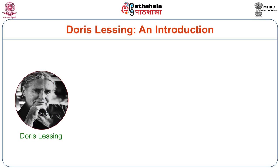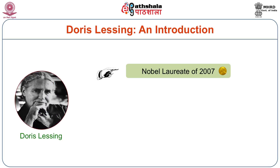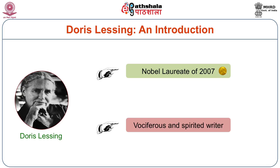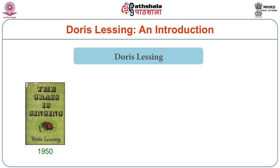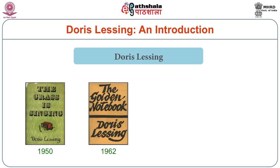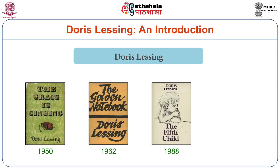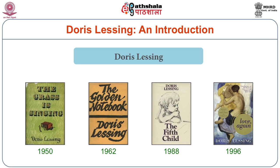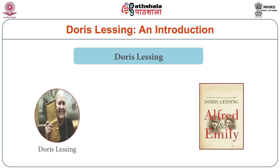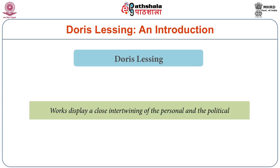Doris Lessing won the Nobel Prize in 2007. She was a very spirited, vociferous writer. Her notable works include The Grass is Singing in 1950, The Golden Notebook in 1962, The Fifth Child in 1988, Love Again in 1996, and the last book she published was Alfred and Emily in 2008, after she won the Nobel Prize. Her works display an intertwining of the personal and the political, which really stands out in her oeuvre.